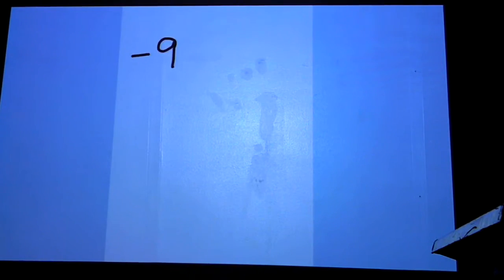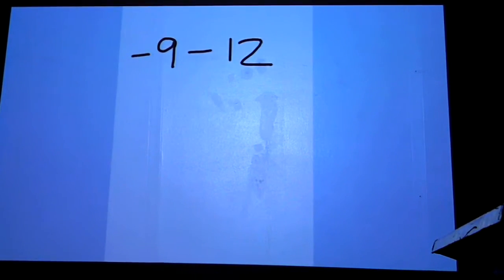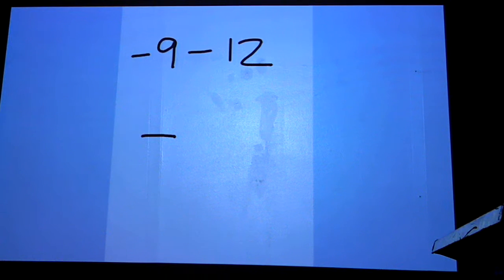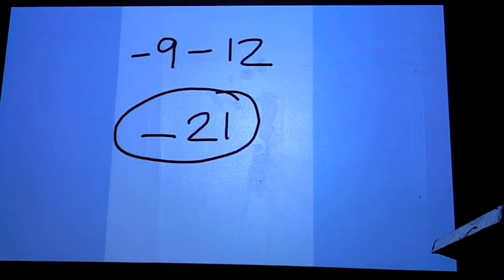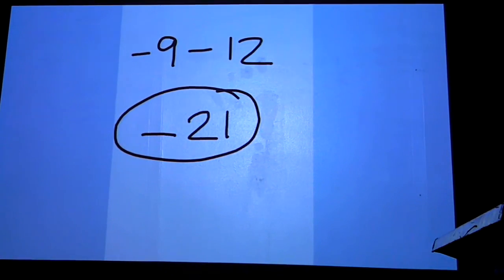This one is negative 9 minus 12. You start with a negative number, you're taking away a positive number. That means your answer is going to be negative, and you add your numbers together, which is 9 plus 12, that would be 21. That makes your final answer negative 21.